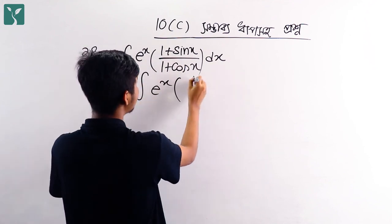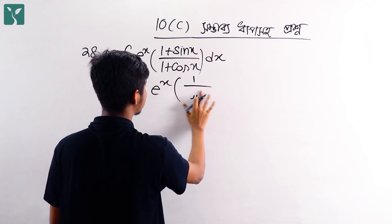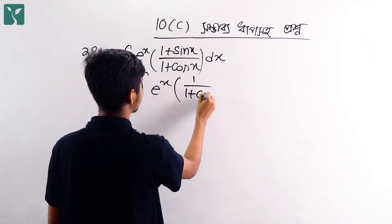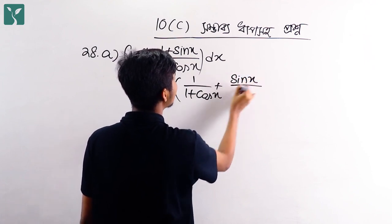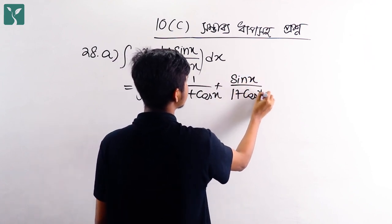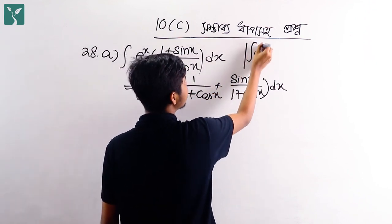We have to use 1 by 1 plus cos x. We have to use sin x by 1 plus cos x. We have to apply a formula to the integration.